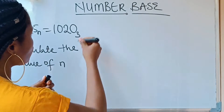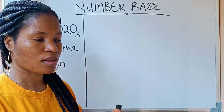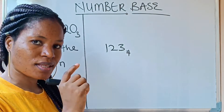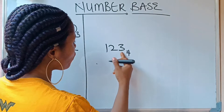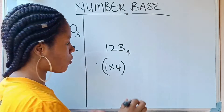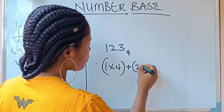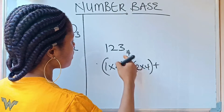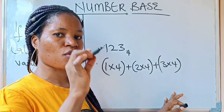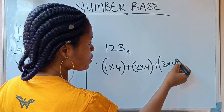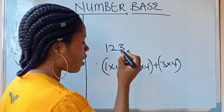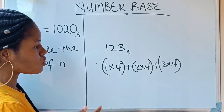Let me introduce you to conversions from another base to base 10. When you have 1 2 3 in base 4 and you want to convert it to base 10, what you are going to do is multiply each digit by powers of 4. So: 1 times 4, plus 2 times 4, plus 3 times 4. Then you start adding the powers of 4 from 0 on the right — 4 raised to the power of 0, 4 raised to the power of 1, 4 raised to the power of 2.